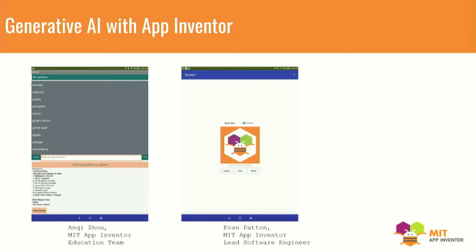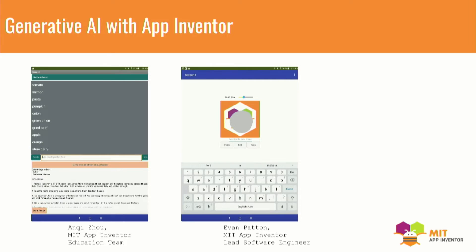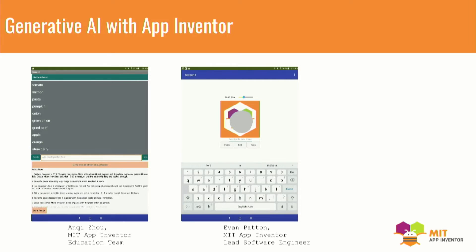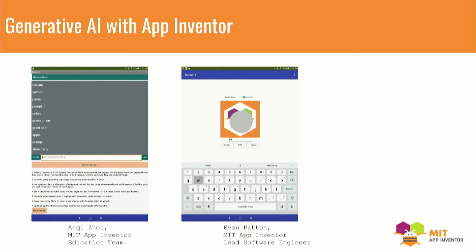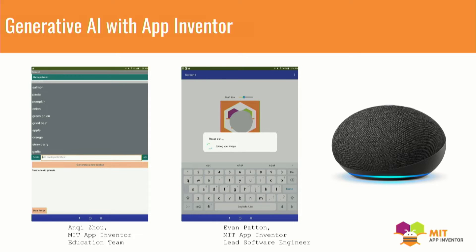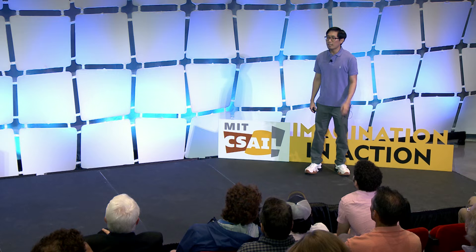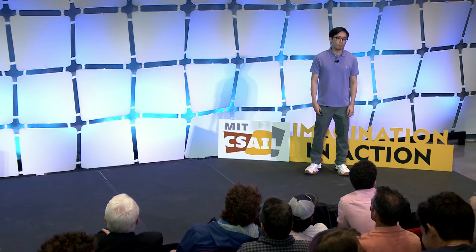Our second line of project is integrating image generation, where we're making it possible for anyone to create apps to automatically generate and edit images with ease. We are also considering combining rule-based conversational AI, such as Alexa, with large language model conversational AI.